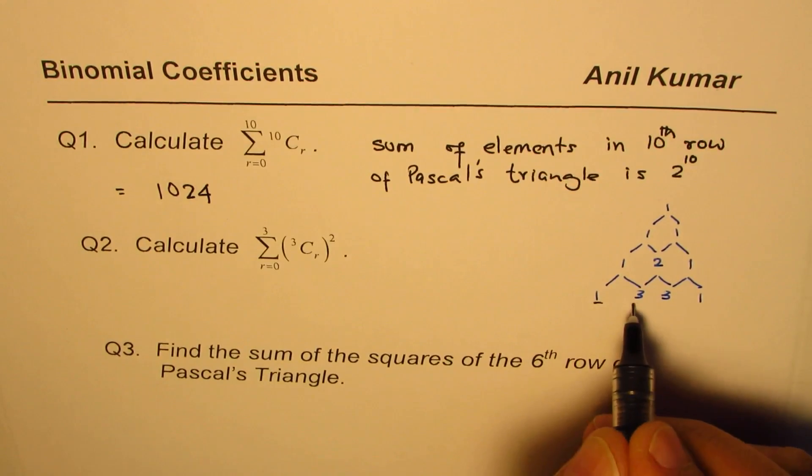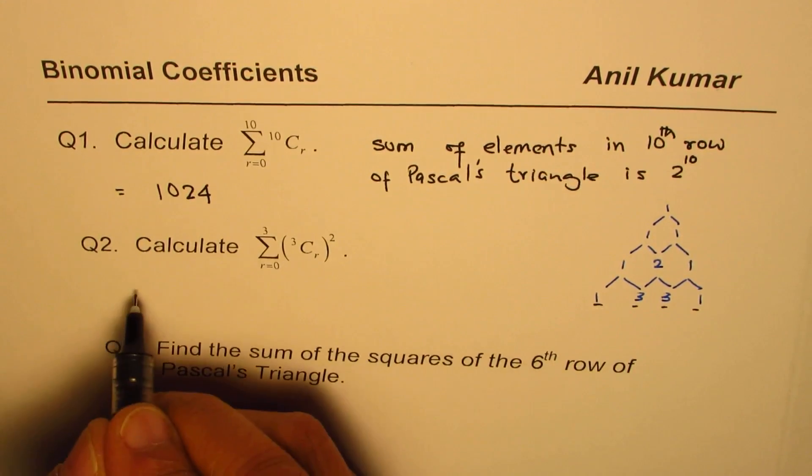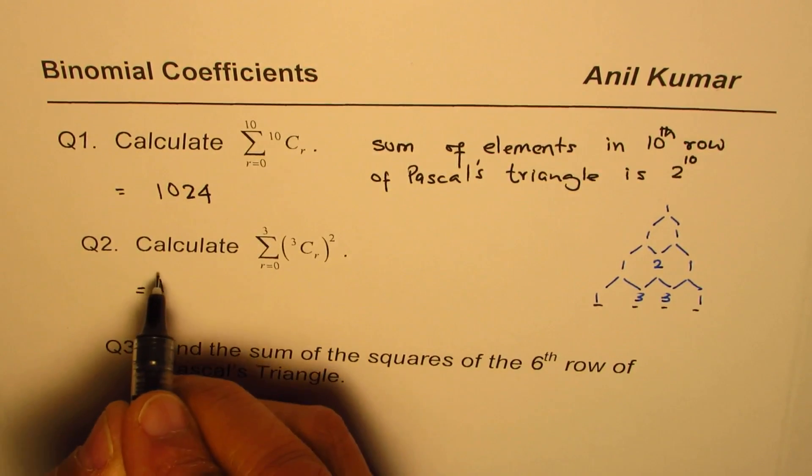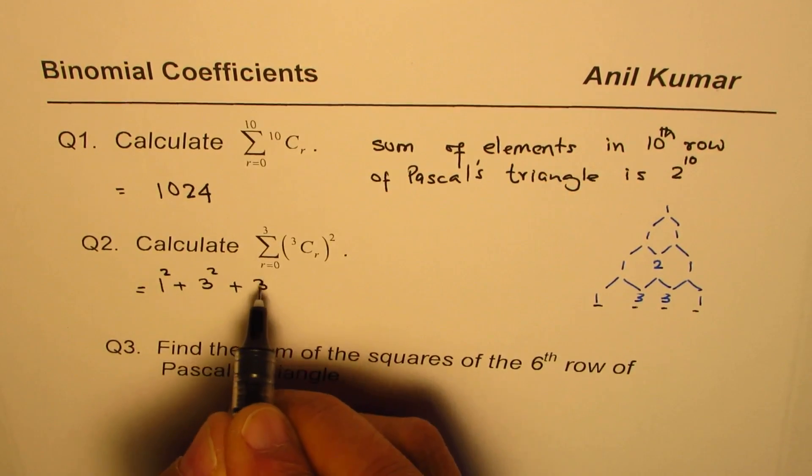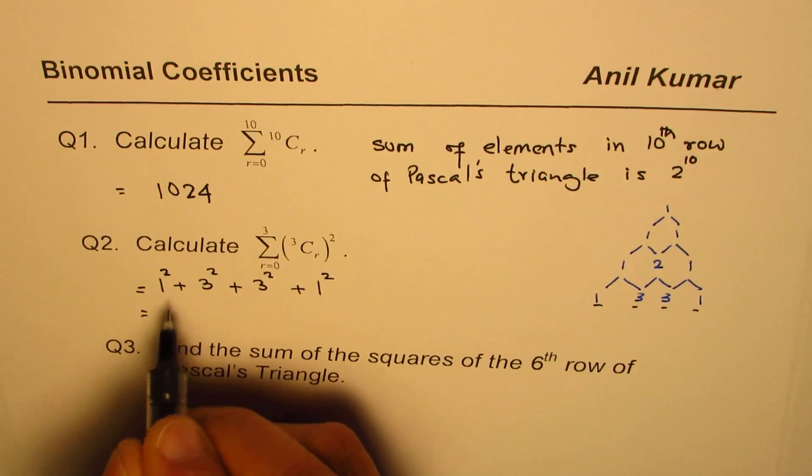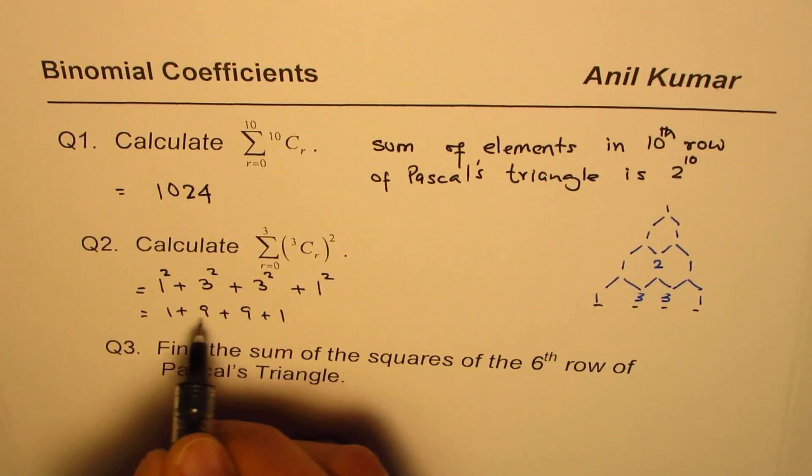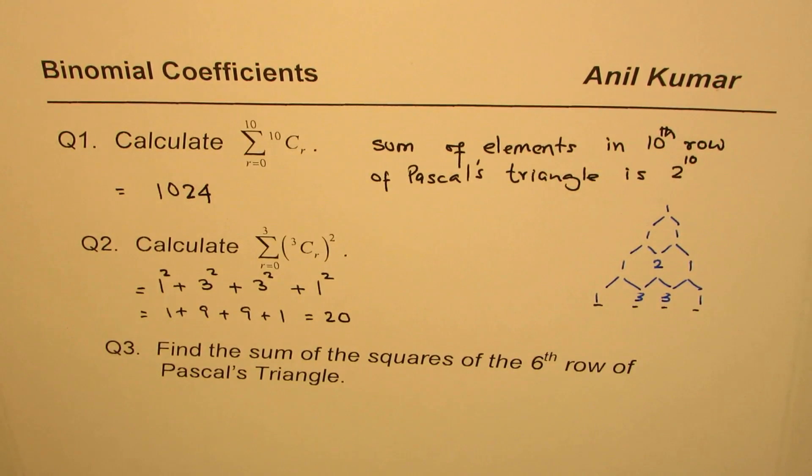So the third row entries, which we are talking about, are these entries. Now we have square of this. So we could write this as 1 square plus 3 square plus 3 square plus 1 square. And when you add them, this is 1 plus 9 plus 9 plus 1, so 10 plus 10 gives us 20. So we get result as 20.